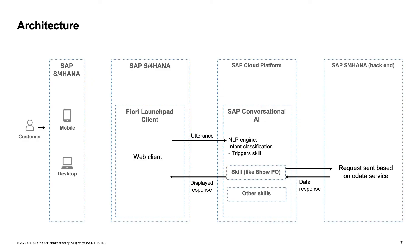As a next step, taking a look at our architecture — here we can see the whole picture of the process happening behind the curtain. A customer who is an SAP S4HANA end-user is using the SAP S4HANA landscape on a mobile or desktop device. They're using the web client which is directly embedded in the Fiori Launchpad in your SAP S4HANA system. The user types in a question, which is an utterance.